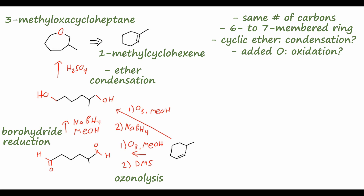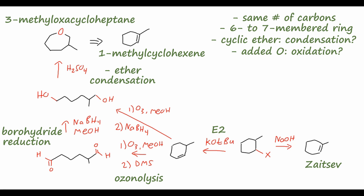Now we have a cyclohexene with the double bond in a different spot from our starting material. We know a good way to form carbon-carbon double bonds is through an elimination reaction. If we replace that double bond with a leaving group X on the carbon, we can eliminate to form it. We have to consider regioselectivity: a non-sterically hindered base like sodium hydroxide or sodium methoxide gives the Zaitsev product — the more substituted alkene — which just gets us back to the starting material. So we need a more sterically hindered base like potassium t-butoxide in tert-butyl alcohol to give the Hofmann product, the less substituted alkene, which is the kinetically favored product.